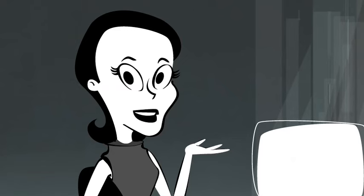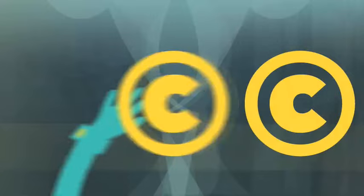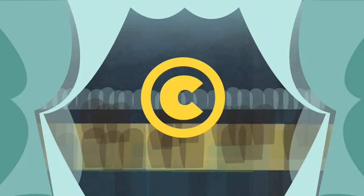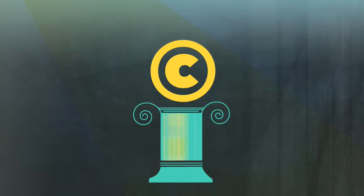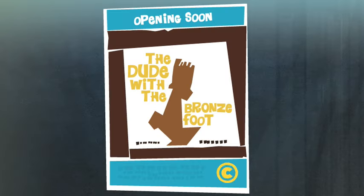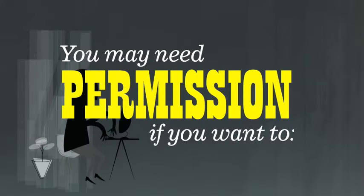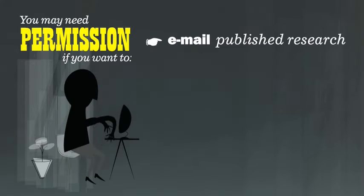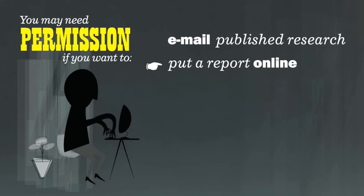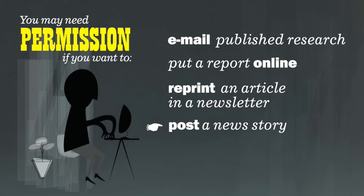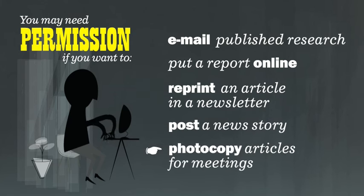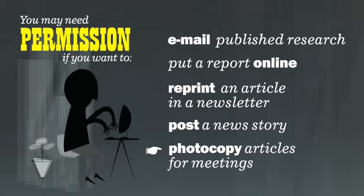So what are the copyright holder's rights? Copyright holders have the exclusive right to copy, distribute, perform, and display their work, and the right to create a derivative work, like when a book is made into a movie. This is why you may need permission if you want to email a research report to your project team or a customer, post an article or report on a company wiki or intranet site, reprint articles in a company newsletter, post a news story on your website, or make a photocopy of a newspaper article to hand out at a meeting.